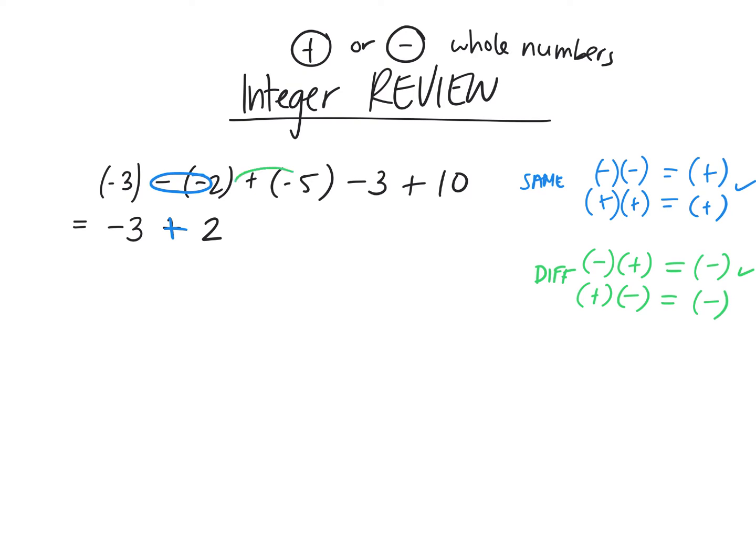Then what happens here? We have plus minus. What does that change to? A positive and a negative changes to a negative. Minus 5. And then we just have minus 3. There aren't two signs there. And then we have plus 10. There are not two signs there.